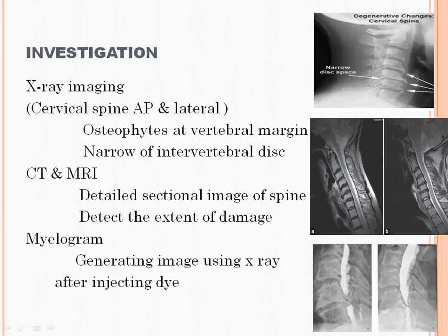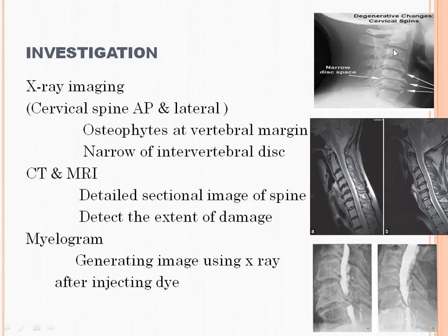Investigation: X-ray of the cervical spine — anteroposterior view and lateral view. In the lateral view, we see osteophyte formation. Osteophyte means bone formation. These are the osteophytes visible on X-ray. These are the intervertebral discs. In cervical spondylosis, the intervertebral disc space is reduced — see here, this is the normal disc space and this is the abnormal, narrowed intervertebral disc space.